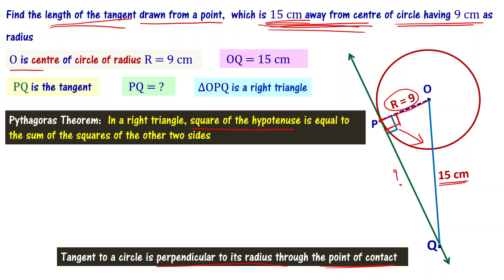As per the Pythagoras theorem, OQ square, that is the square of the hypotenuse, is equal to the sum of the squares of the other two sides: OQ square equals OP square plus PQ square. We know OQ equals 15 and OP, the radius, equals 9. Substituting: 15 square equals 9 square plus PQ square.